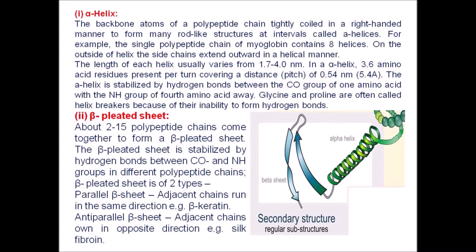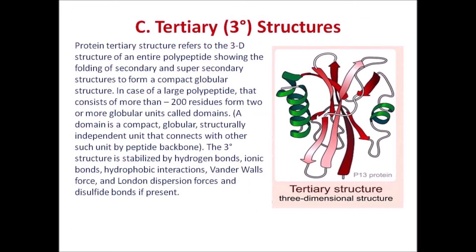In a beta pleated sheet, about two to fifteen polypeptide chains come together, stabilized by hydrogen bonds between CO and NH groups in different polypeptide chains. Beta pleated sheets are of two types: parallel beta sheet, where adjacent chains run in the same direction (example: beta keratin), and anti-parallel beta sheet, where adjacent chains run in opposite directions (example: silk fibroin).